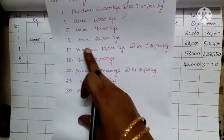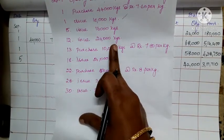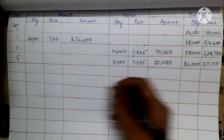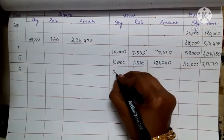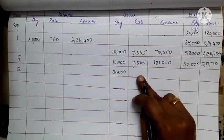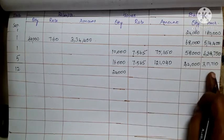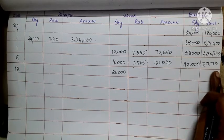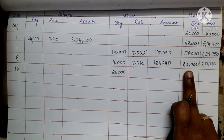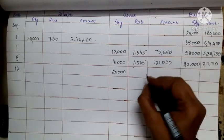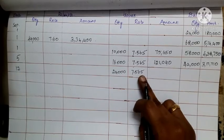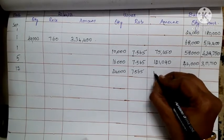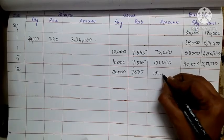Date 12: issue is 24,000 kg. Divide 3,17,710 by 42,000 to get the rate of 7.565. Multiply 24,000 by 7.565 to get the issue amount of 1,81,560. The balance quantity is 42,000 minus 24,000 equals 18,000.